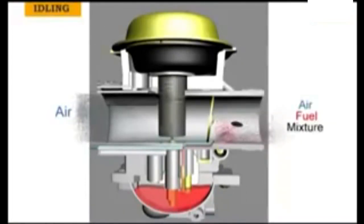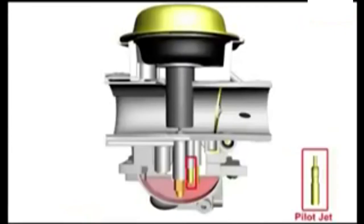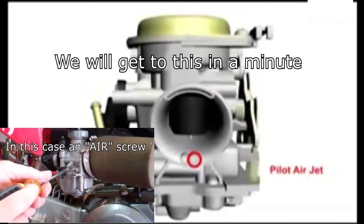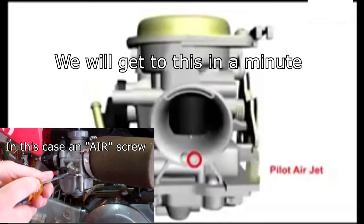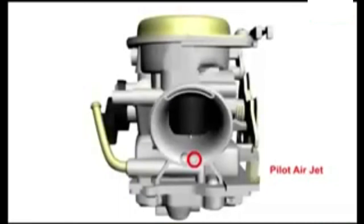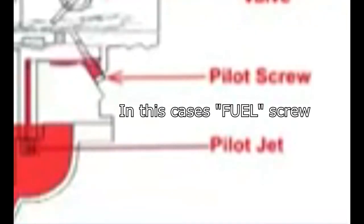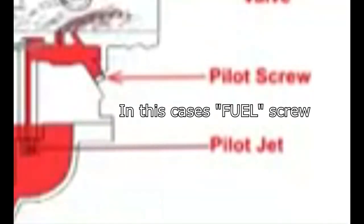Let's take a look at what adjustments are in play at idle. The pilot jet, the pilot air jet — which is usually not adjustable in most carburetors — is just a term for the passage that the small amount of air mixes with the fuel as it enters. And the mixture screw.